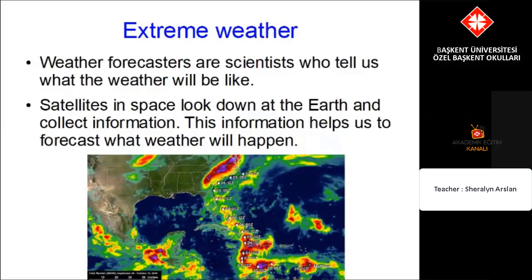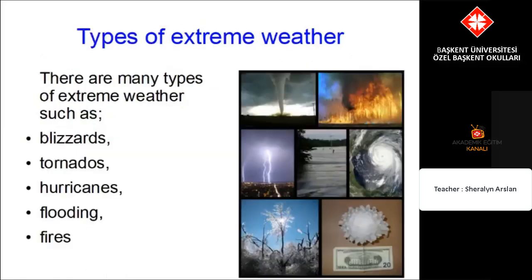Extreme weather: weather forecasters are scientists who tell us what the weather will be like. Satellites in space look down at the Earth and collect information to help us forecast what weather will happen. There are different types of extreme weather including blizzards, tornadoes, hurricanes, flooding and fires.